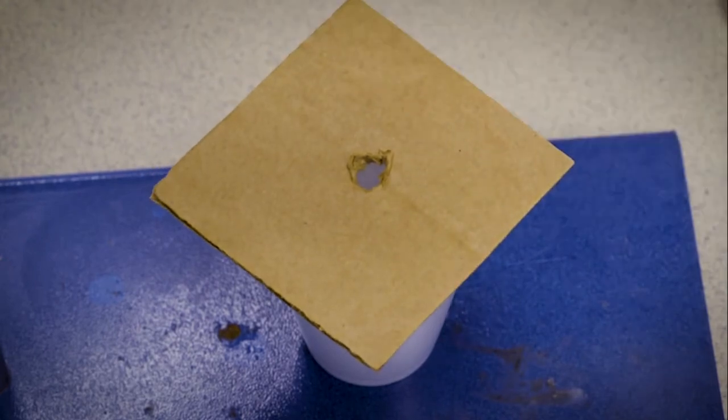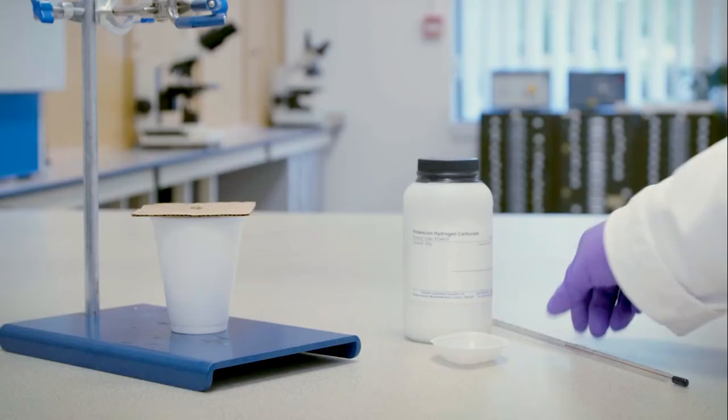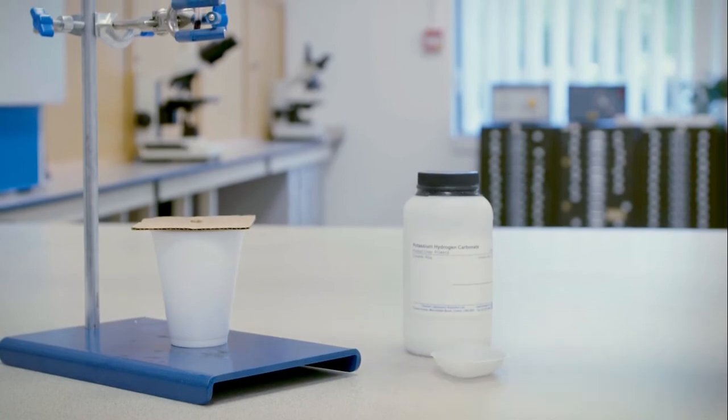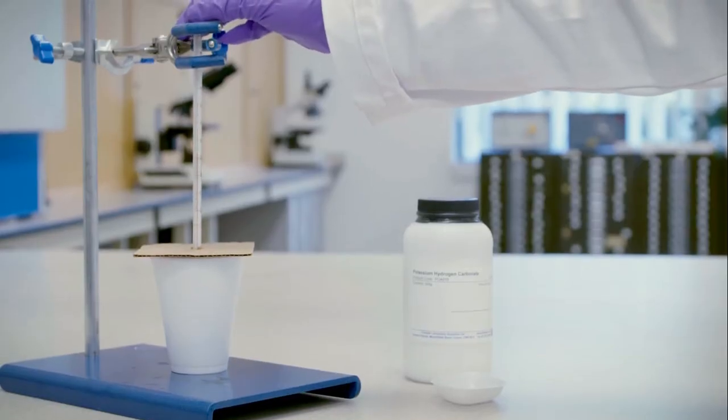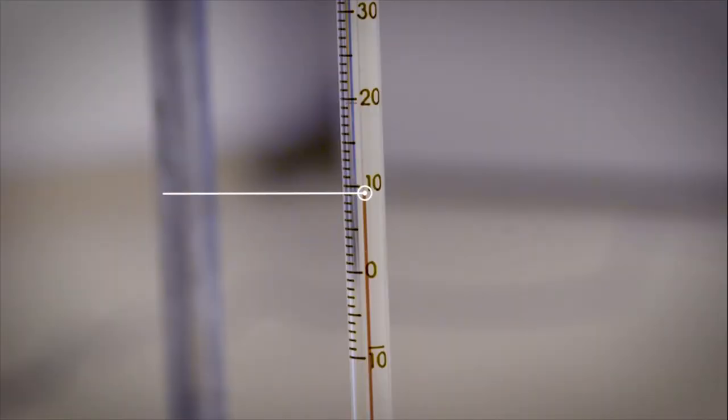The lid should have a hole for the thermometer. The hole should be wide enough for the thermometer and to allow for the gas produced to escape. The thermometer is carefully guided through the calorimeter lid. The temperature of the reaction mixture decreases and the temperature at its lowest point is recorded.